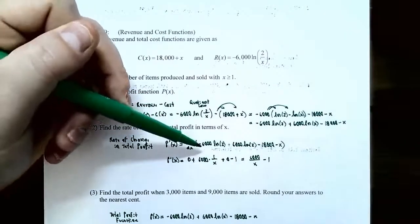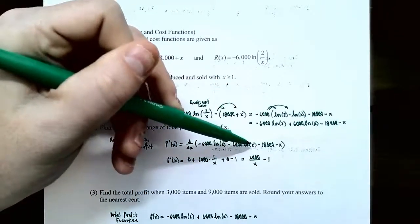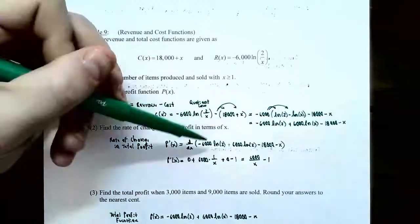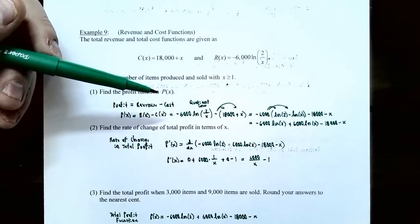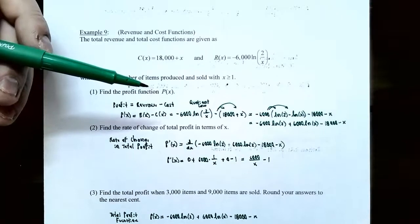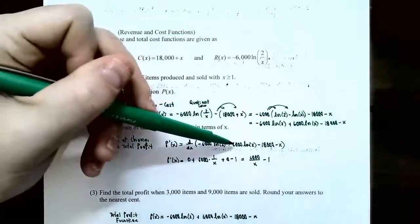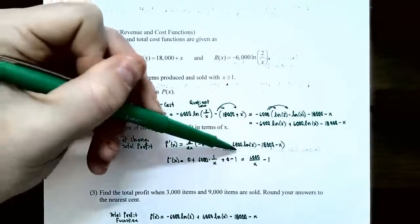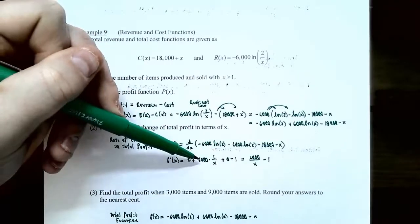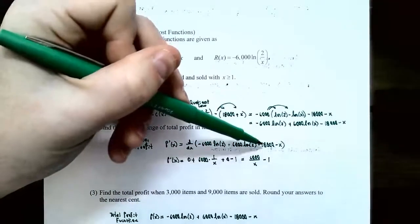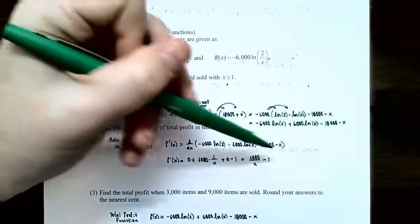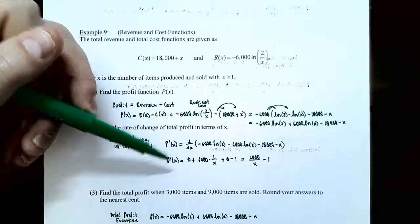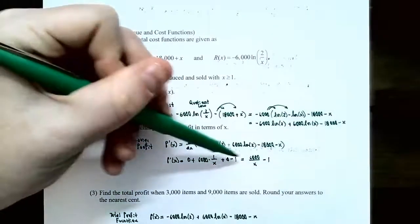Part 2: find the rate of change of the total profit, which is the marginal profit P prime of x. Take the derivative of each term: negative 6,000 times natural log of 2 is a constant, so its derivative is 0. The derivative of 6,000 natural log of x is 6,000 times 1 over x. The derivative of 18,000 is 0, and the derivative of x is 1. So the marginal profit function is P prime of x equals 6,000 divided by x minus 1.